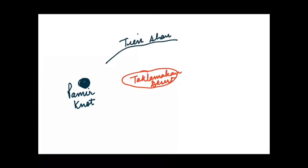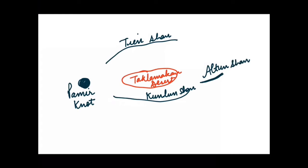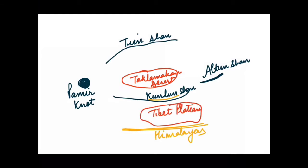Below the Tien Shan Mountains, the Kunlun Shan Mountains begin. To the east of the Tien Shan Mountains is the Kunlun Shan range, which is located in the eastern hills. Further along is the Tibetan Plateau. If you remember, we also discussed the Karakoram Ranges, which are located in China.